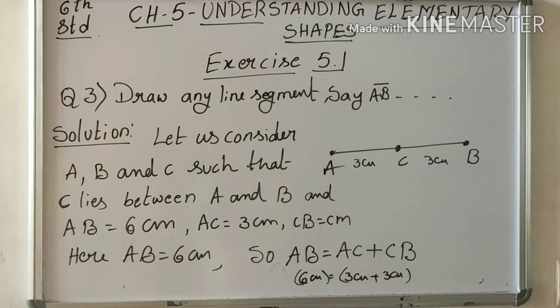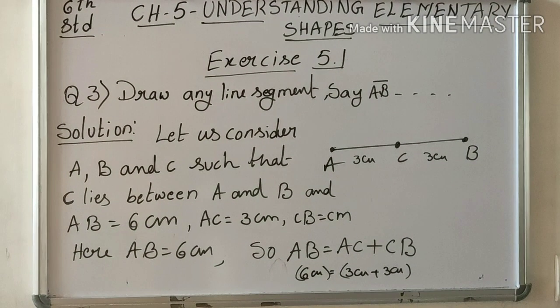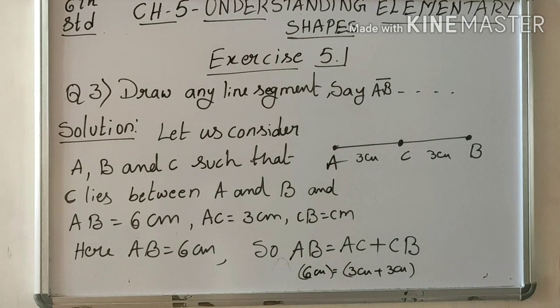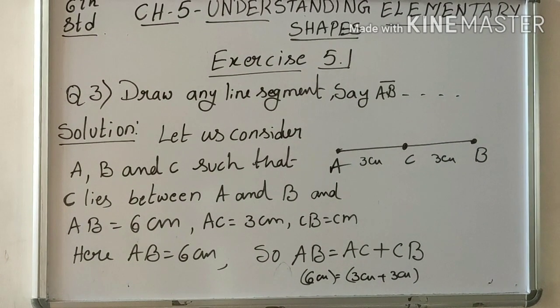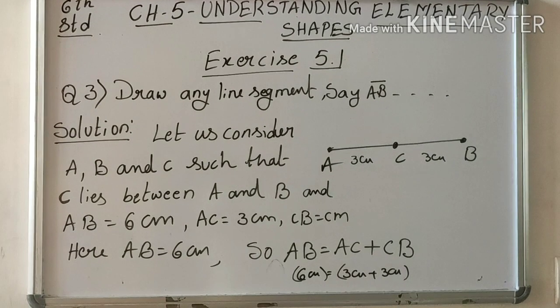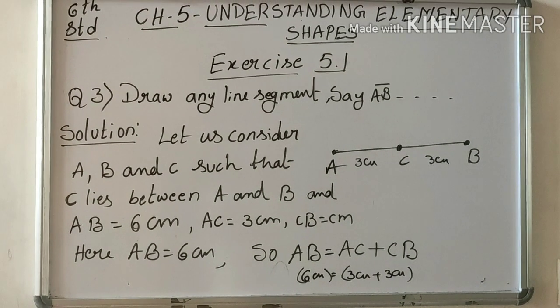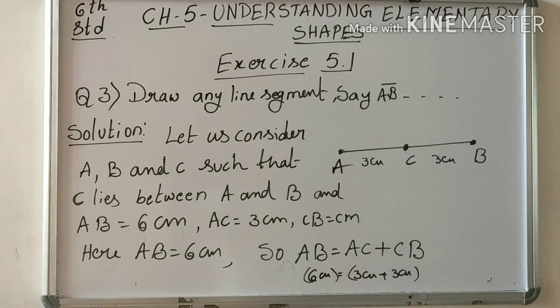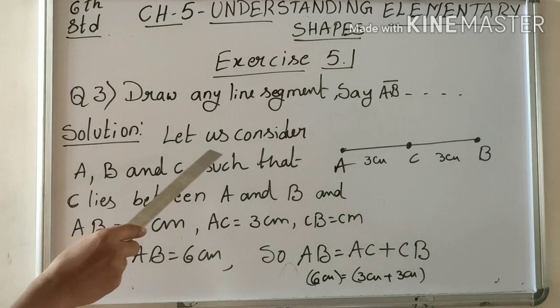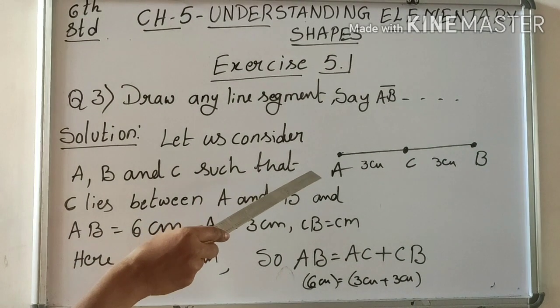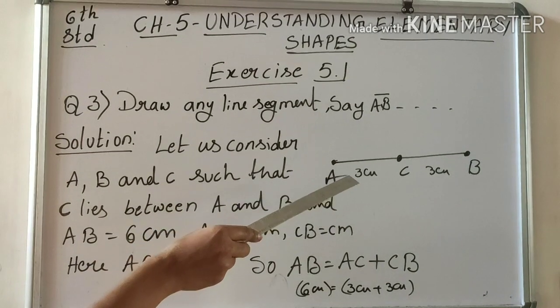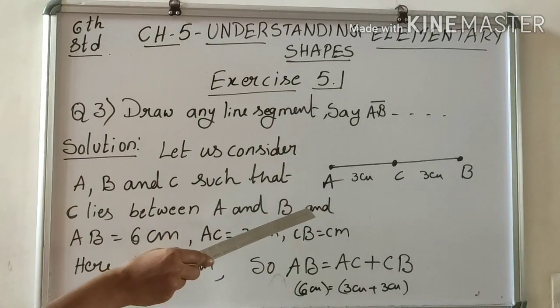Question number three. Draw any line segment say AB. Take any point C lying in between A and B. Measure the lengths of AB, BC and AC. Is AB equal to AC plus CB? Let us consider three points A, B and C, such that C lies between A and B.